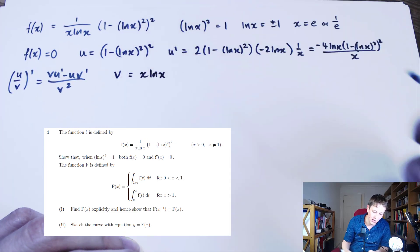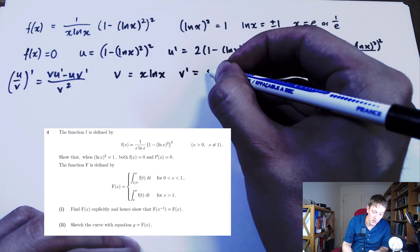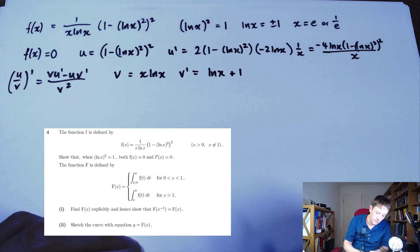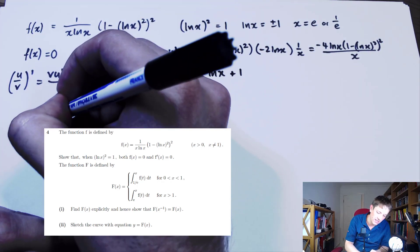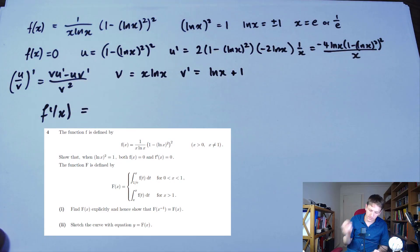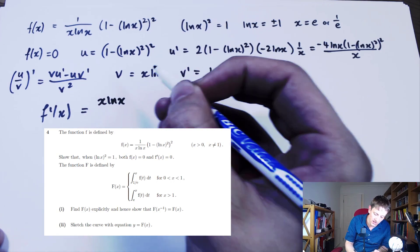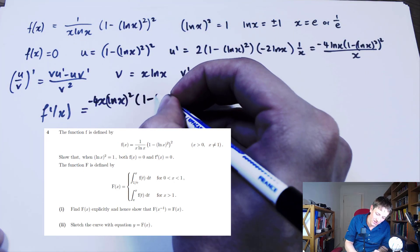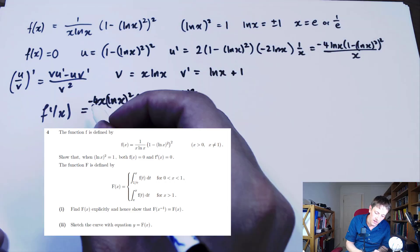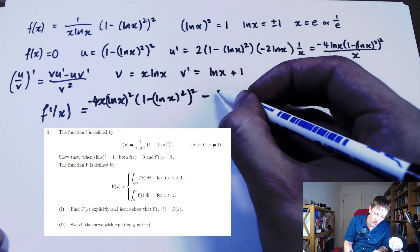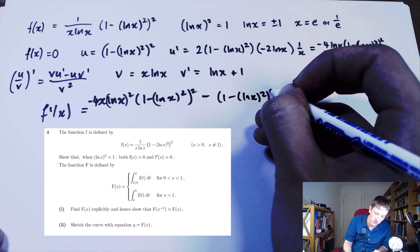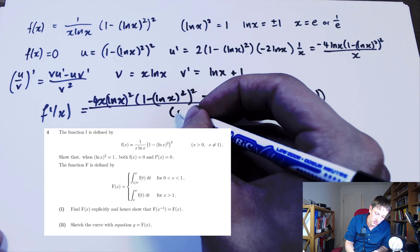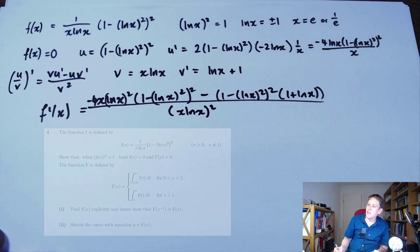And v = x·log x, so the derivative v' by the product rule is just log x + x·(1/x), which is log x + 1. So we get f'(x) by writing v·u' − u·v' all over v². I'll tidy that up a little as I go along.